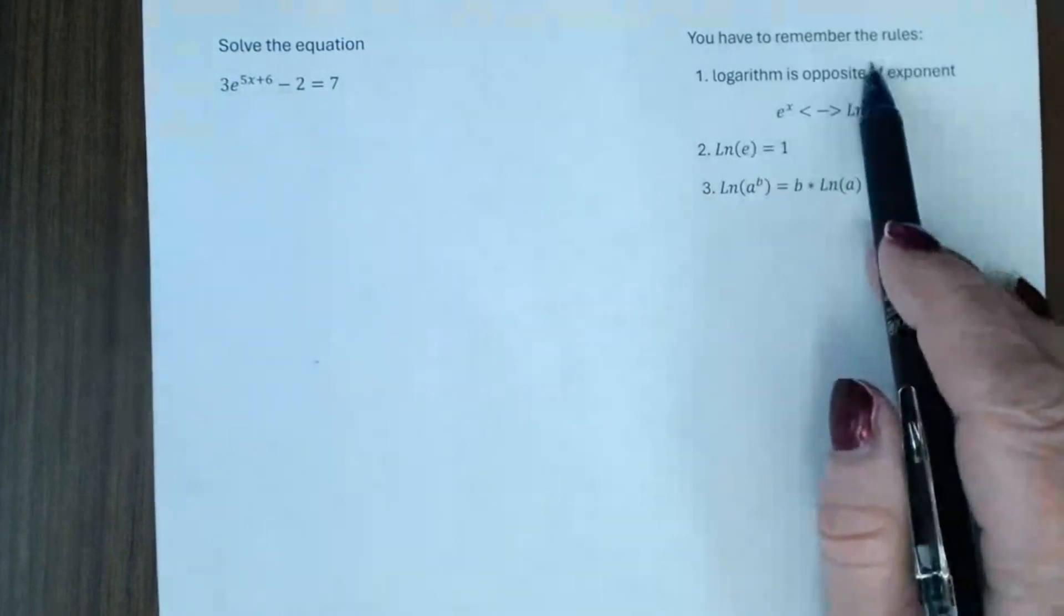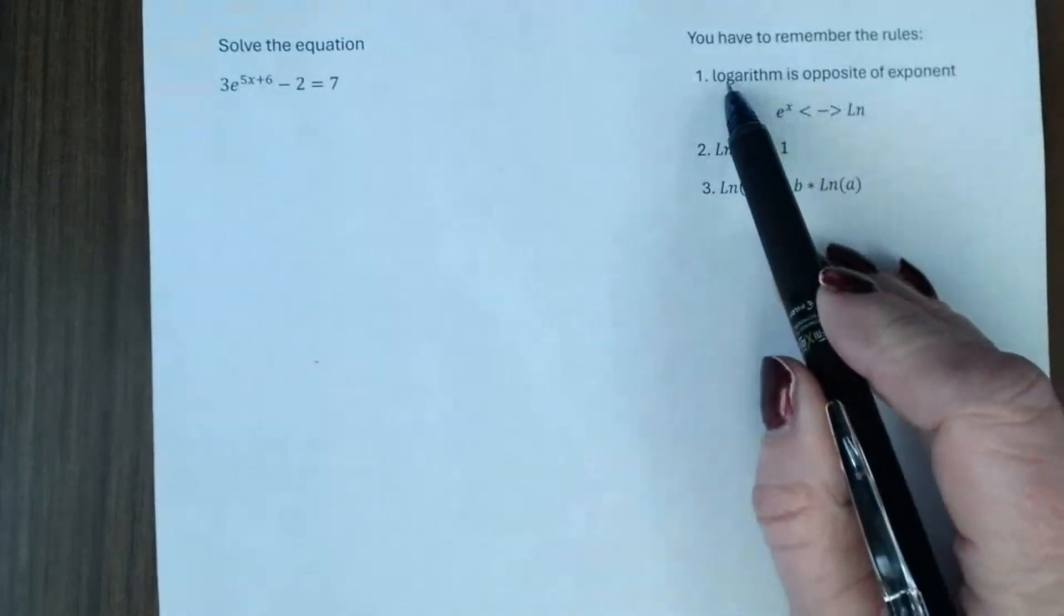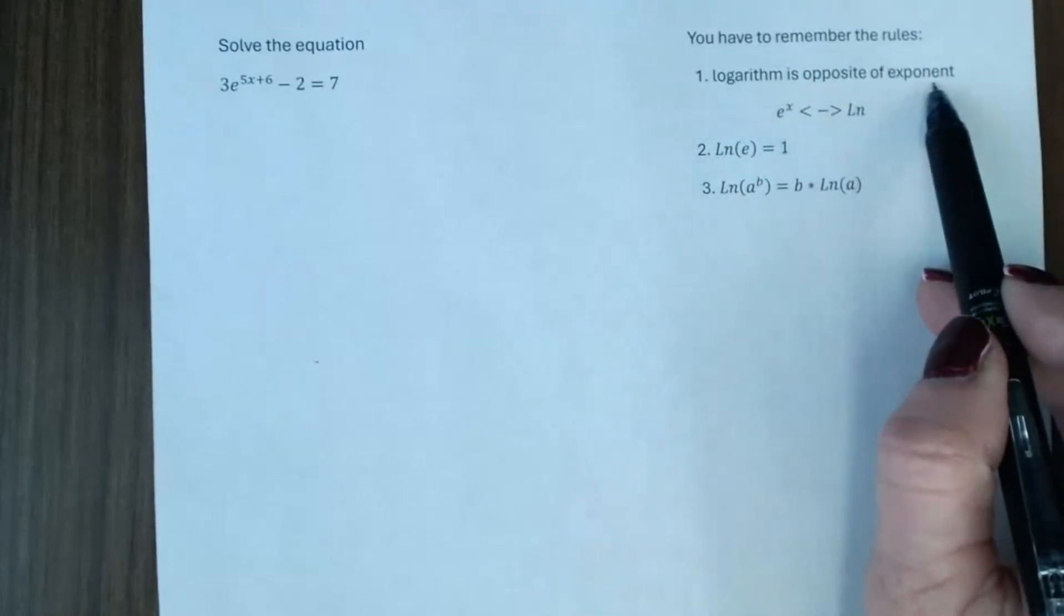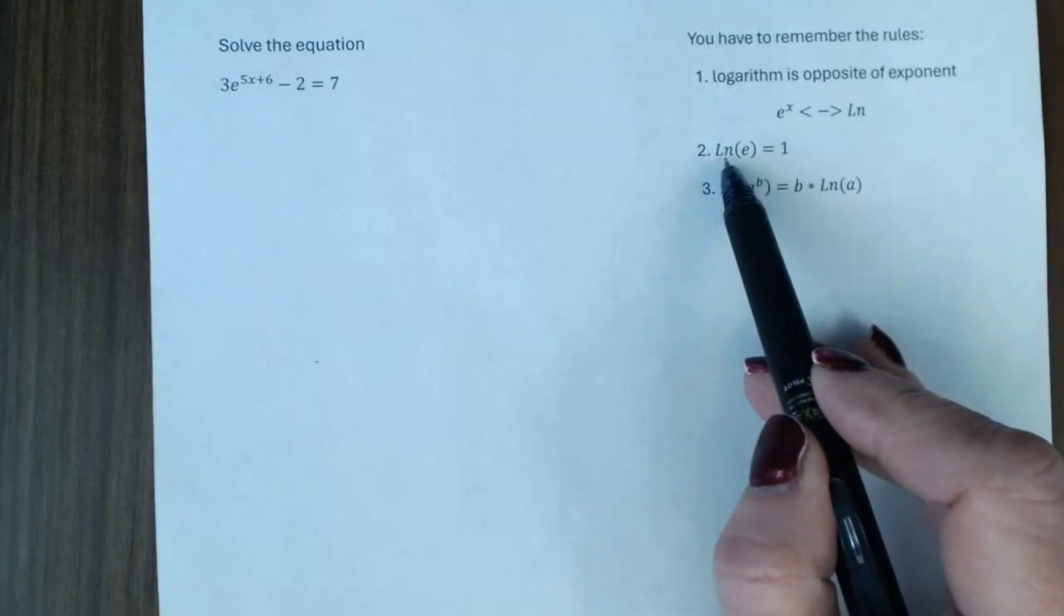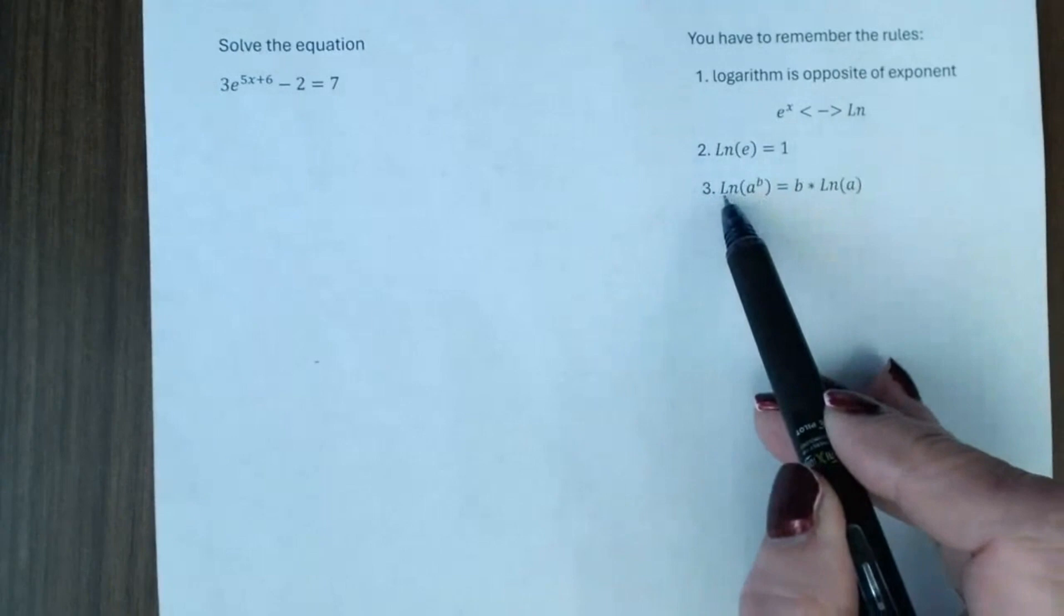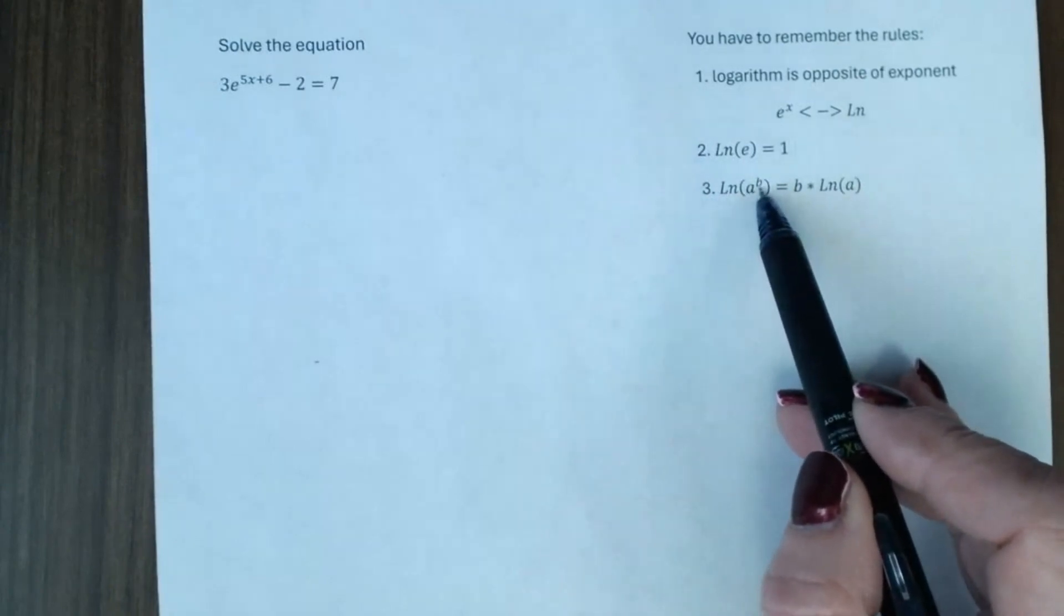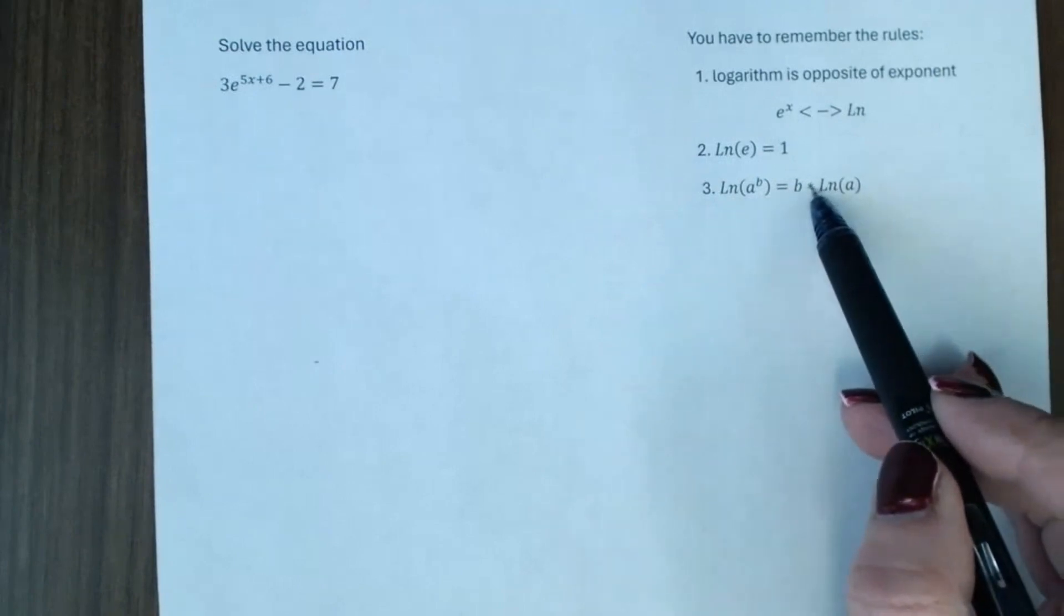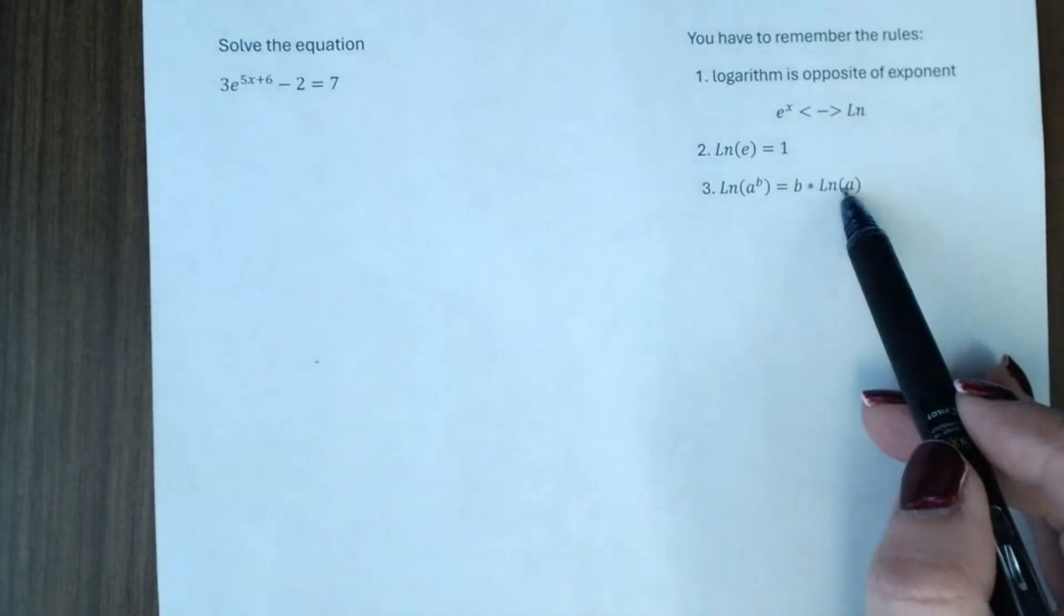We have to remember a couple of rules. First of all, you have to know that a logarithm is the opposite of exponents. Next rule is natural logarithm of e is equal to 1. And when we have logarithm of a number to the exponent, we can rewrite as a multiplication of the exponent and as a logarithm.